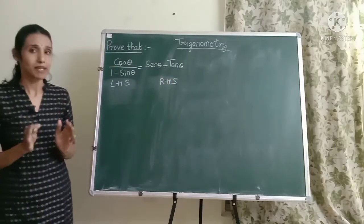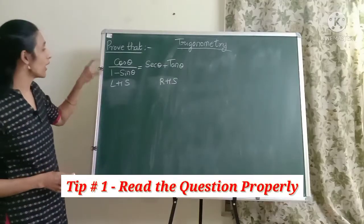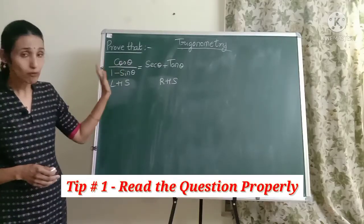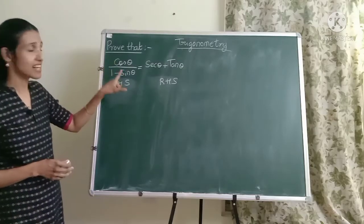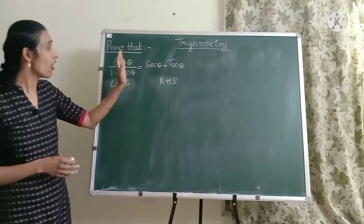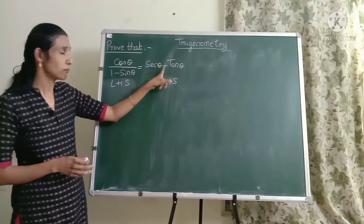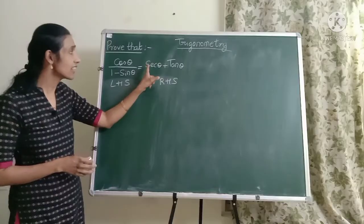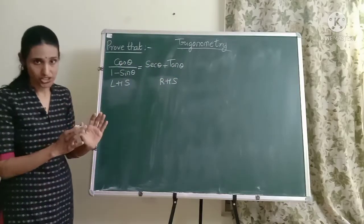Now the very first tip is to read the question properly. Now the left hand side you have cos theta divided by 1 minus sin theta. There is a division, there is cos and there is sin. Now on the right hand side you have sec theta plus tan theta. So there is a plus sign and you have a sec and you have a tan ratio. Like this you should read the question.